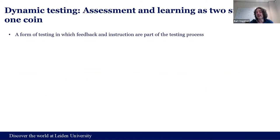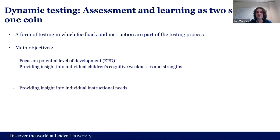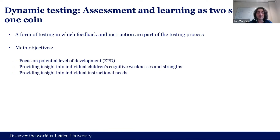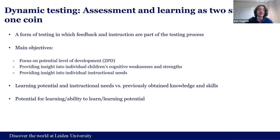It's a form of testing — pre-test, training, post-test — in which feedback and instruction are part of the testing process rather than being a measurement error, as is usually seen in the static traditional test. The main objectives are focusing on the potential level of development, providing insight into children's cognitive weaknesses and strengths, and their individual instructional needs. We focus on potential instructional needs rather than previously obtained knowledge and skills. The outcomes of dynamic testing we usually call potential for learning, ability to learn, or learning potential — linked to Binet's idea that intelligence is the ability to learn.